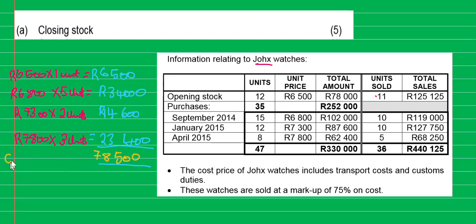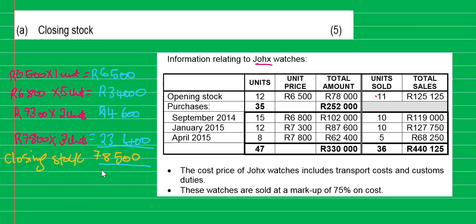This is what we call closing stock. Notice: one unit was left, two units were left, and three units were left — these are the closing balances of the units bought, at the cost price per unit. Our closing stock value is therefore 78,500.